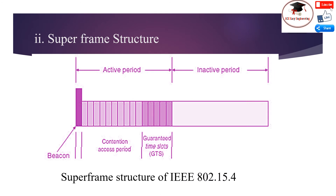Superframe structure: The beacon mode of IEEE 802.15.4 defines the superframe structure to organize channel access and data exchanges. The superframe structure, as shown in the figure, has two main periods: the active and the inactive period. The active period is divided into 16 time slots. The beacon frame is transmitted in the first time slot, followed by the Contention Access Period (CAP) and the Contention Free Period (CFP), which utilize the remaining time slots. The CFP is also known as Guaranteed Time Slots (GTS) and can utilize up to seven time slots. The length of active and inactive periods, as well as the length of single time slots, are configurable and traffic dependent.